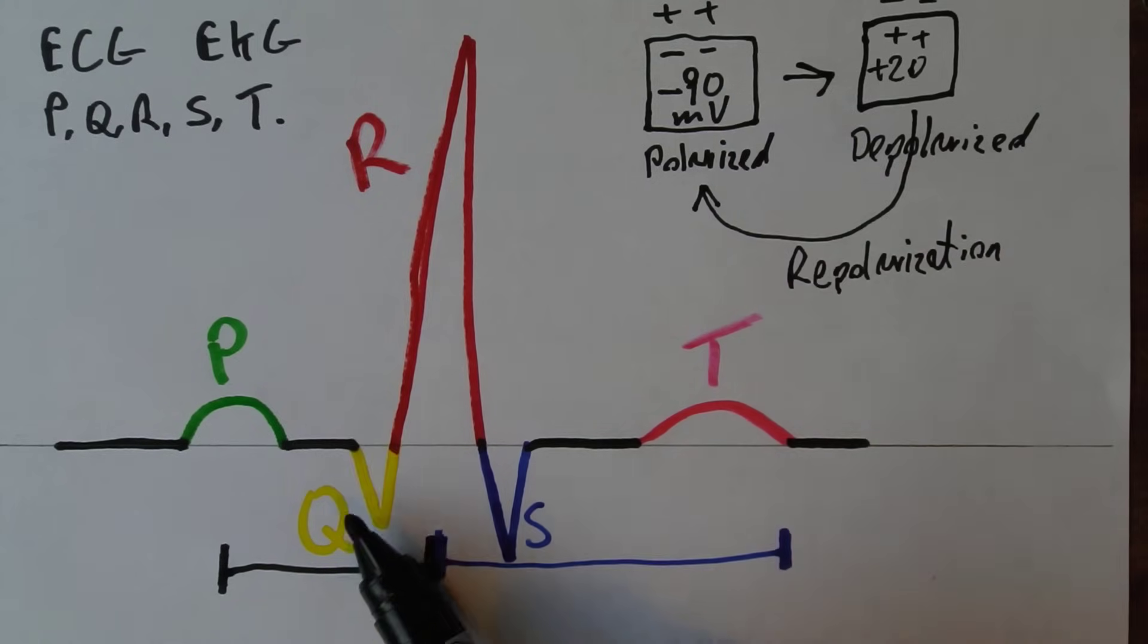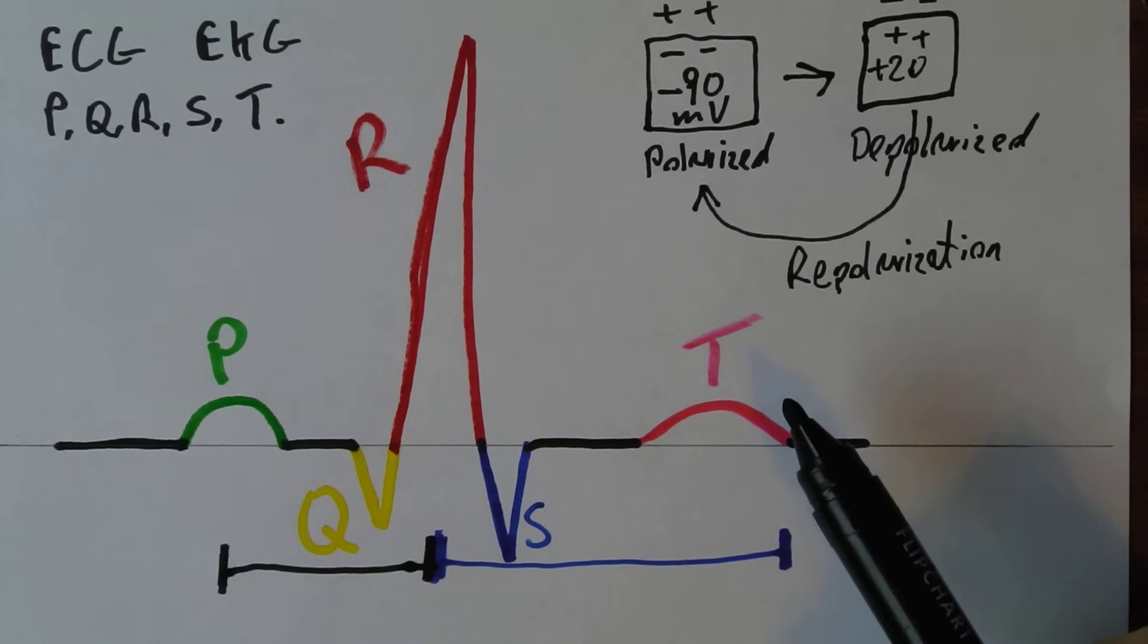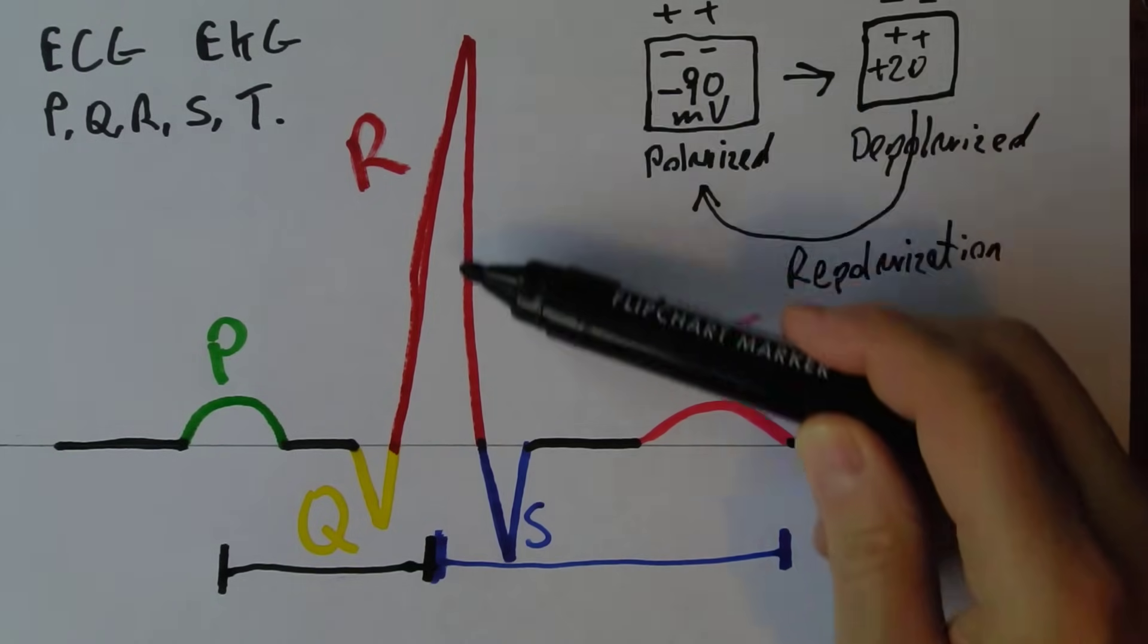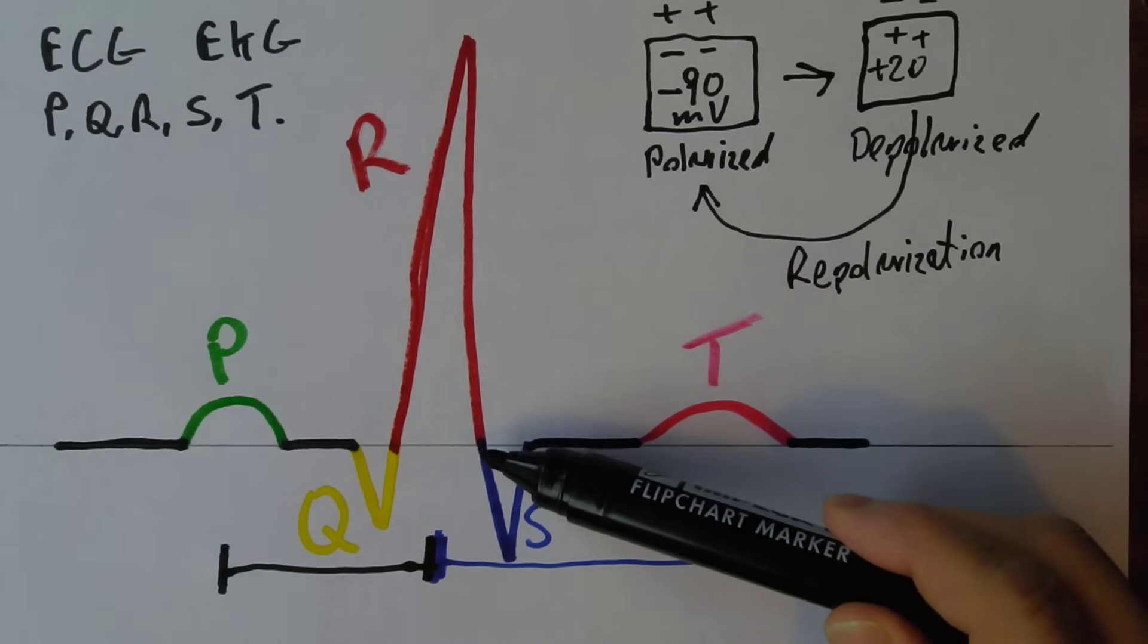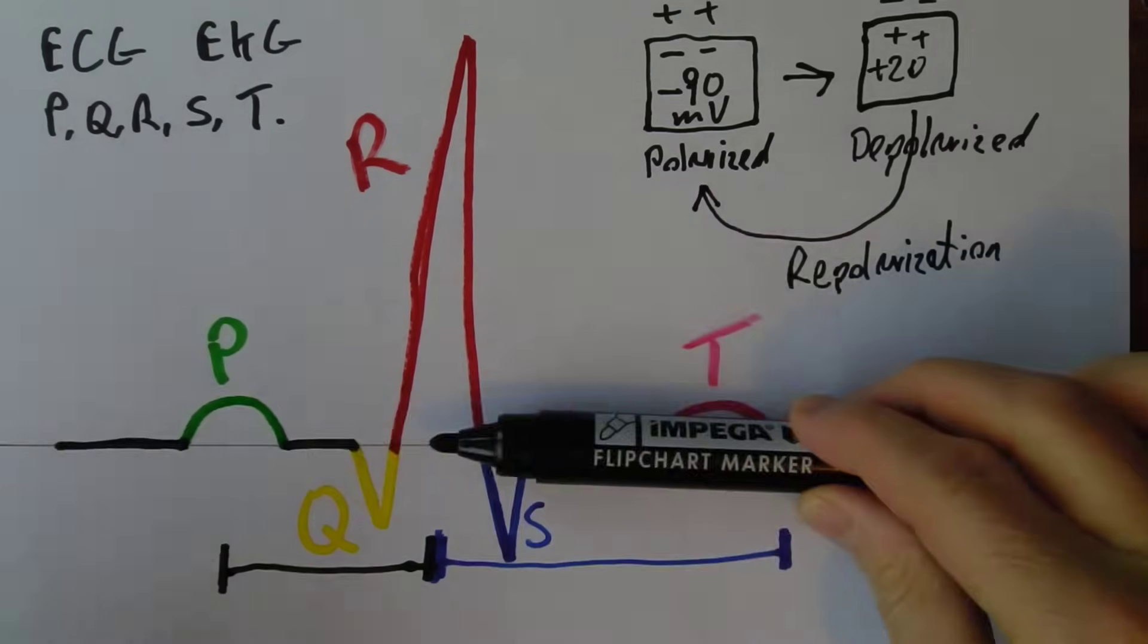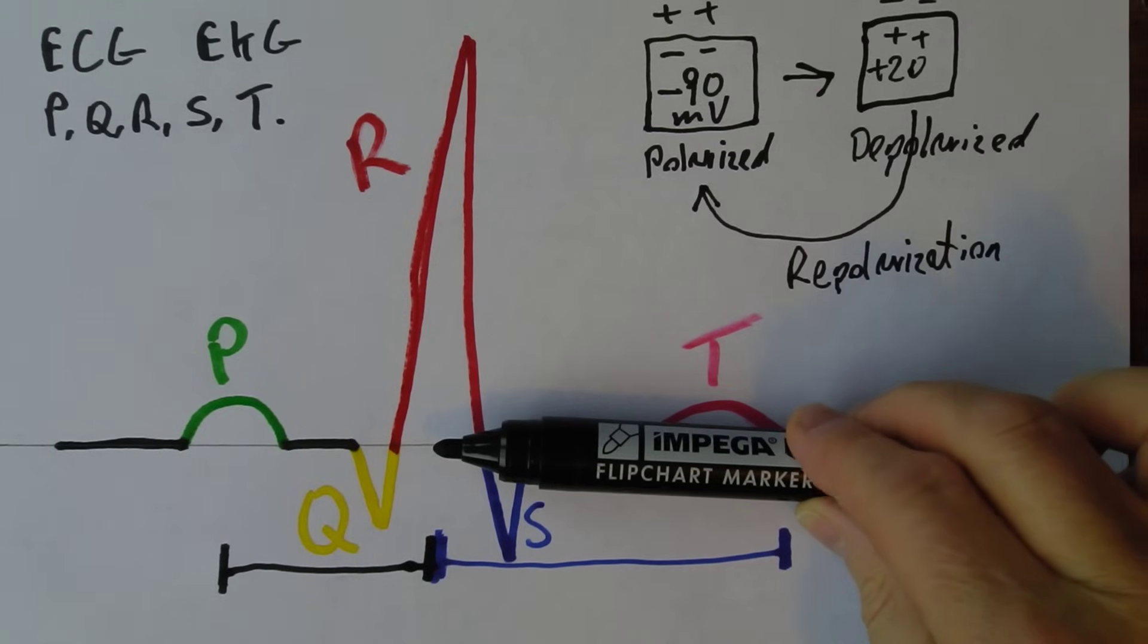So P in green, Q, R, S and T all in their relevant colors. And what confuses a lot of people is that the wave is the upward deflection and the downward deflection. Or here the downward deflection and the upward deflection. Away from this isoelectric line. Iso just meaning the same.